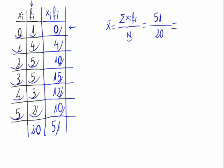So 51 divided by 20 is 2.55. The mean of the statistic distribution we have is 2.55.